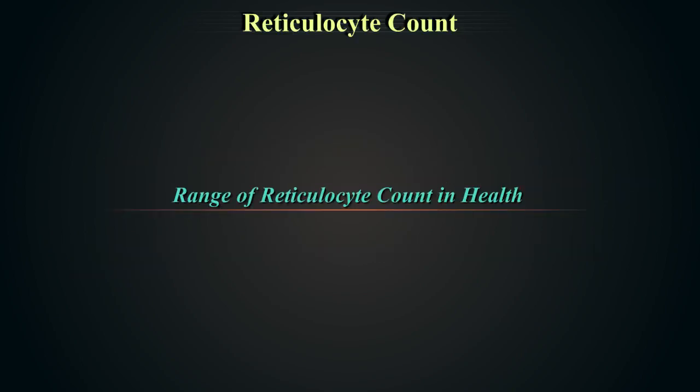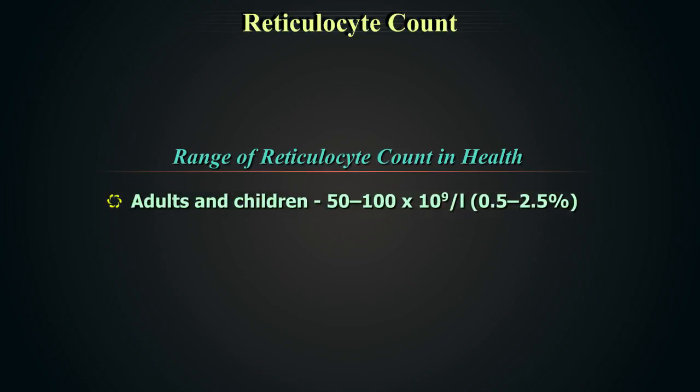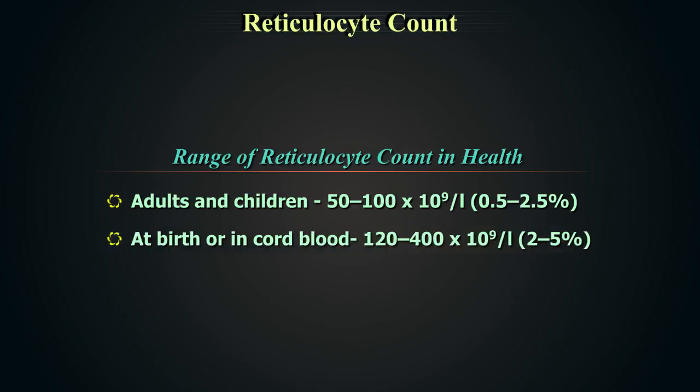The normal range of reticulocyte counts in adults and children is 50,000 to 100,000 per litre, or 0.5% to 2.5%. At birth or in cord blood, it is 120,000 to 400,000 per litre, approximately 2% to 5%.